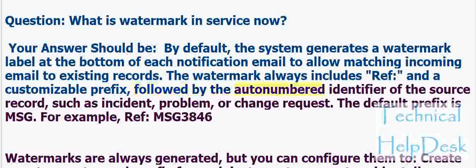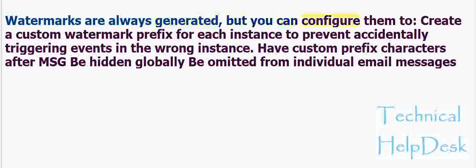The watermark is followed by the auto-numbered identifier of the source record, such as incident, problem, or change request. Watermarks are always generated, but you can configure them to: create a custom Watermark prefix for each instance to prevent accidentally triggering events in the wrong instance, have custom prefix characters after the message be hidden globally, or be omitted from individual email messages.